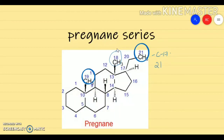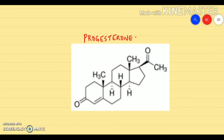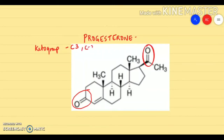It belongs to the 5-alpha series — the hydrogen atom at the fifth position is below the plane, so it is 5-alpha pregnane. This is the structure of progesterone, showing the 21-carbon skeletal system. The important structural features of progesterone are: it contains two keto groups, one in ring A at the third position, and the second keto group at C20 carbon atom.